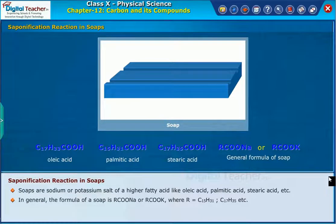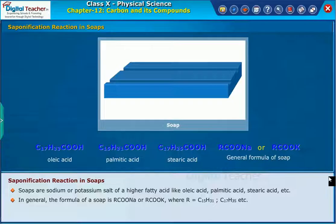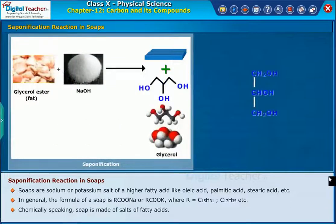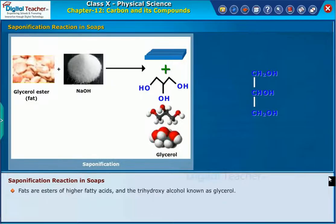In general, the formula of a soap is RCOO-Na or RCOO-K, where R is equal to C15H31, C17H35, etc. Chemically speaking, soap is made up of salts of fatty acids, fats or esters of higher fatty acids, and the trihydroxyl alcohol known as glycerol.